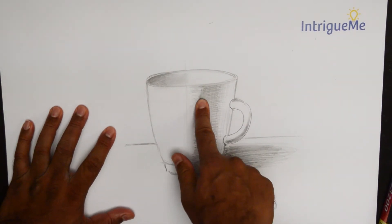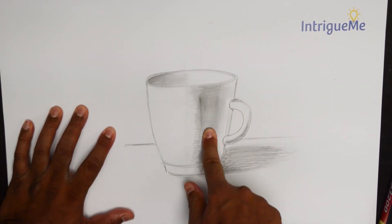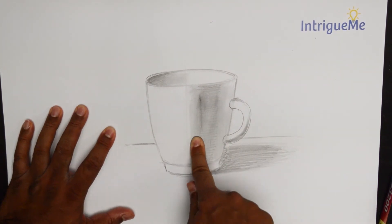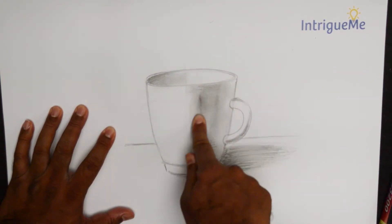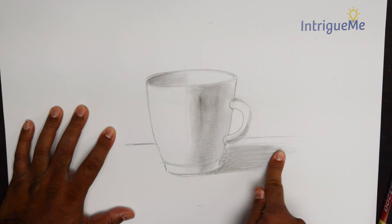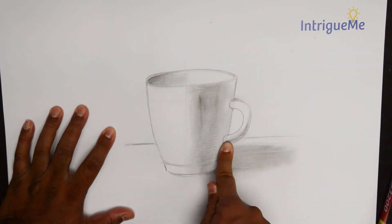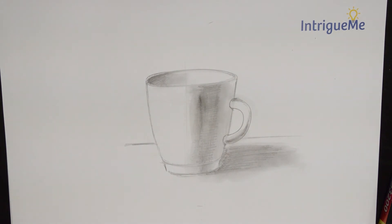Now if I smudge this, go all the way here. You have a fairly acceptable mug with that light source coming from this side.